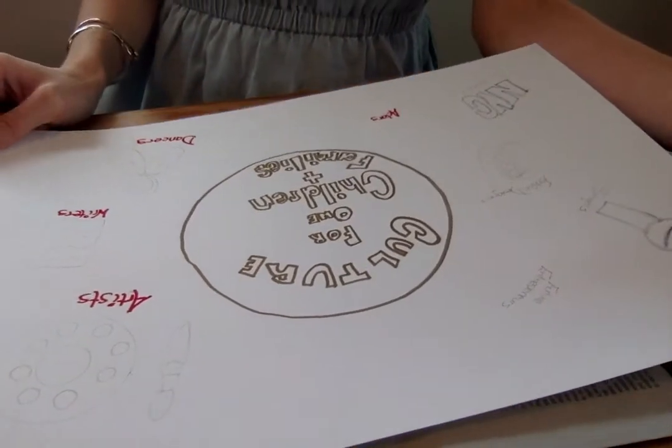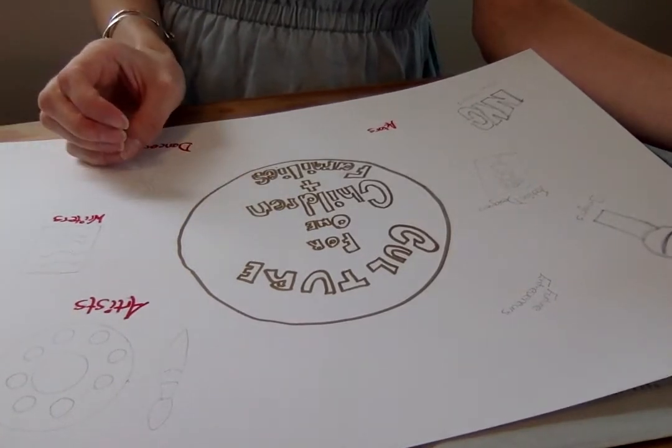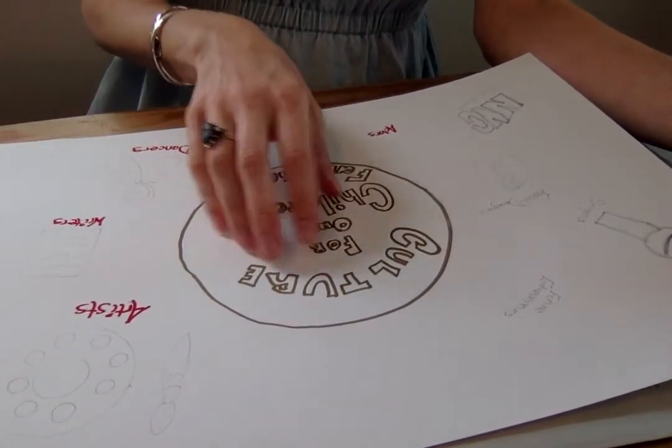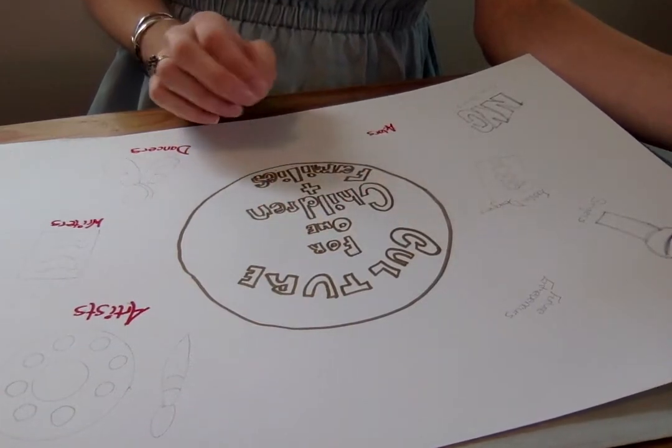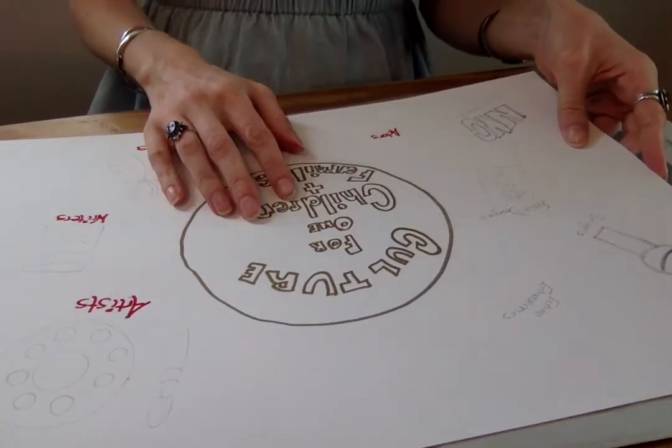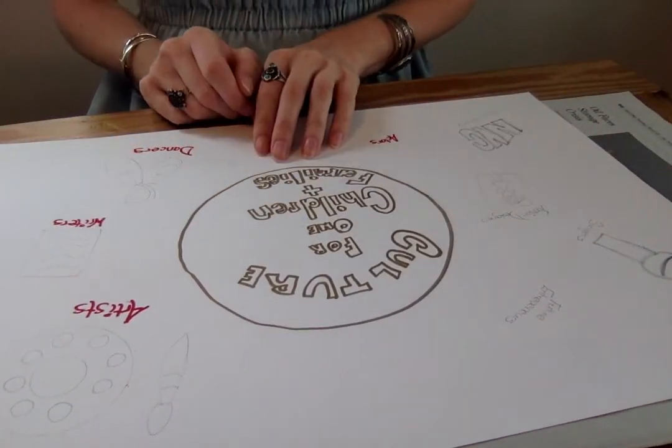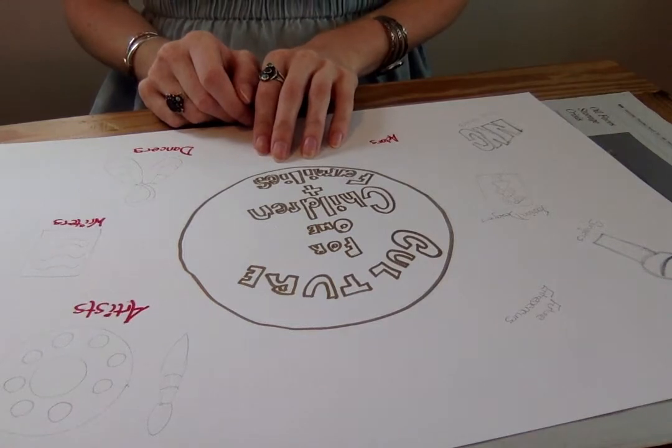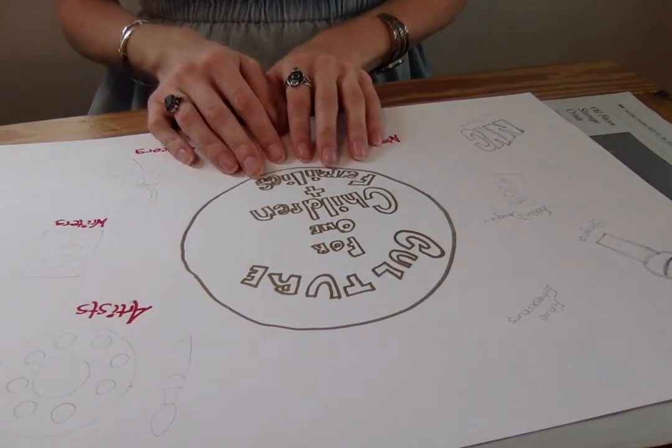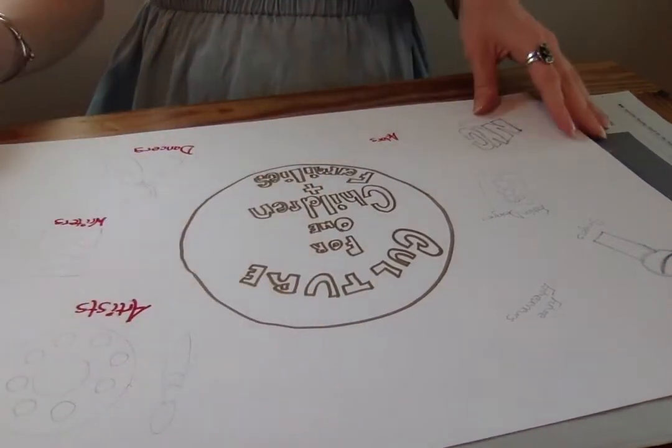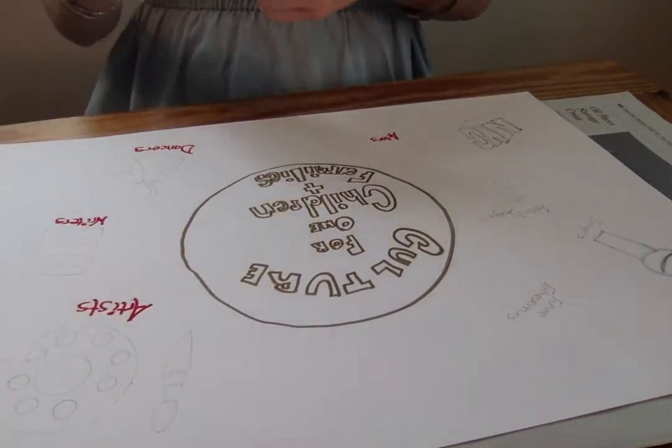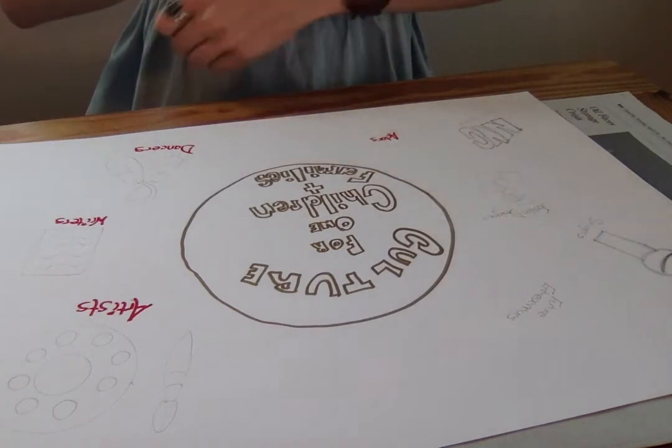So what I did, like I talked about in the other video, is I started with the words of what I want to say and I'm sorry this is backwards but you'll be able to see it in the picture in the end. So I put Culture for One, children and families because I'm so proud of all of you and everything that you're always doing to keep learning and keep reaching for your dreams. And then around that I'm putting different things that are representative of that, so different pictures.